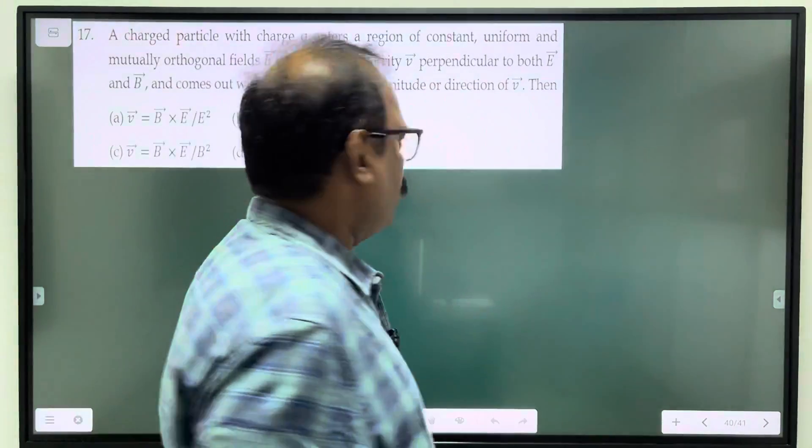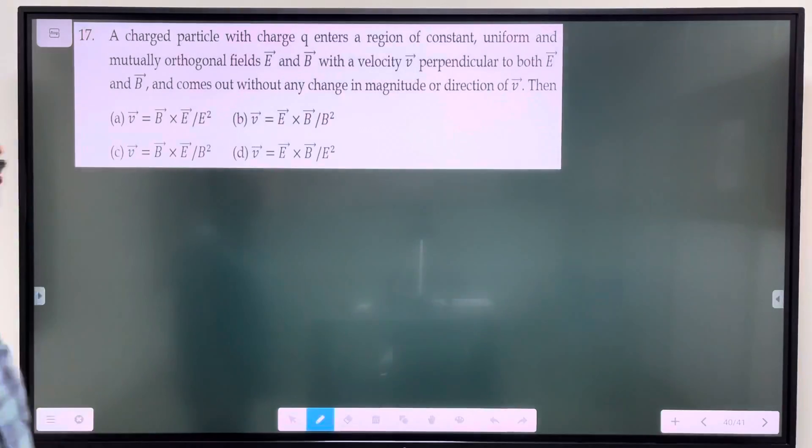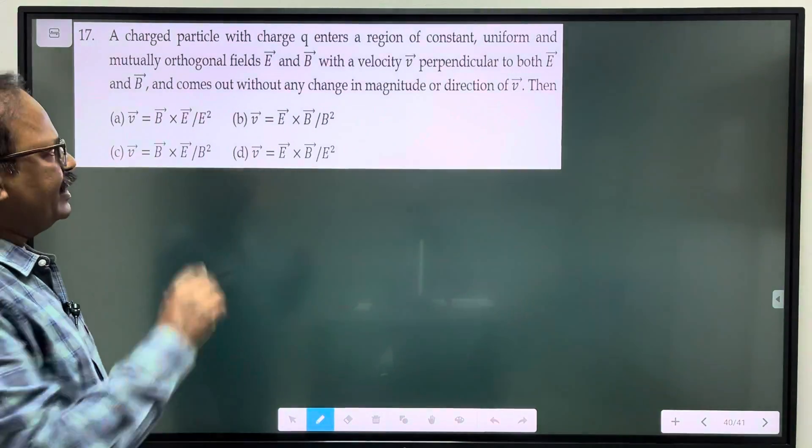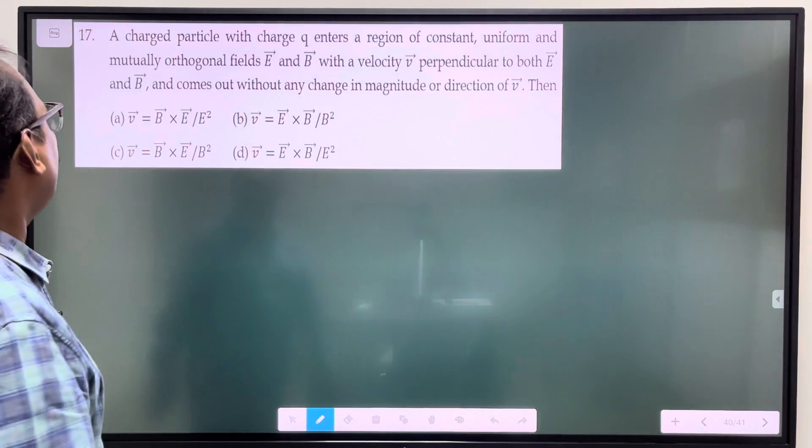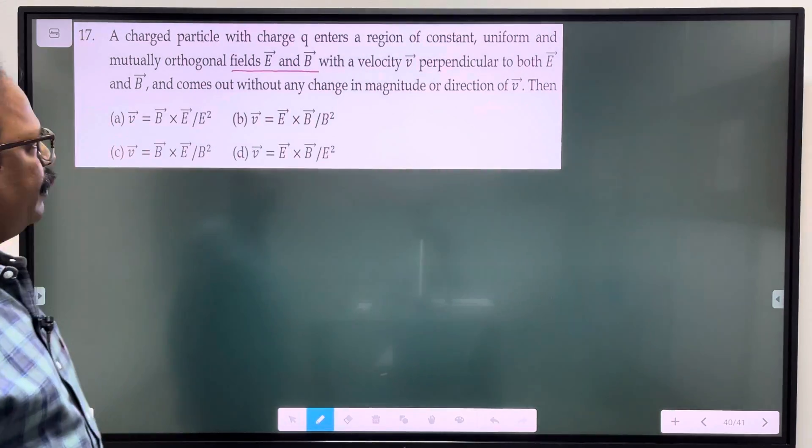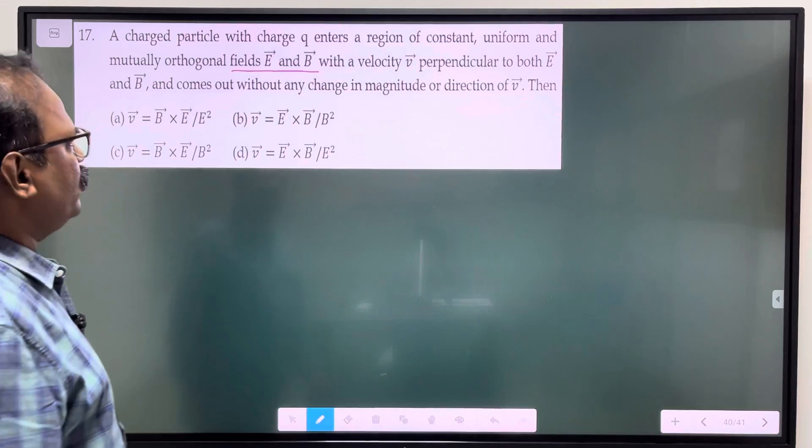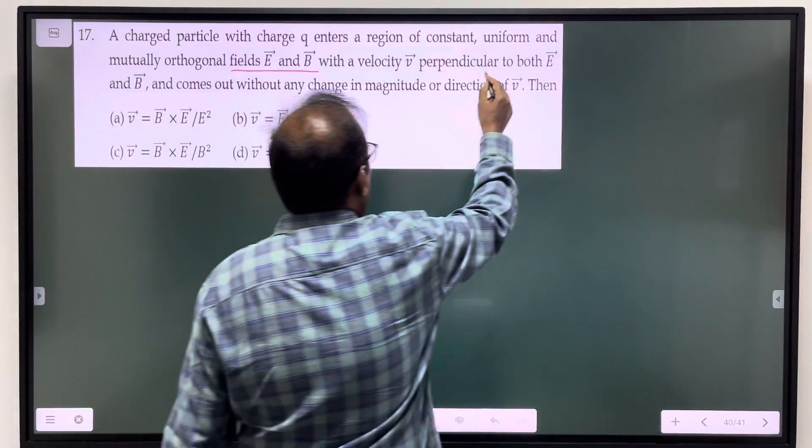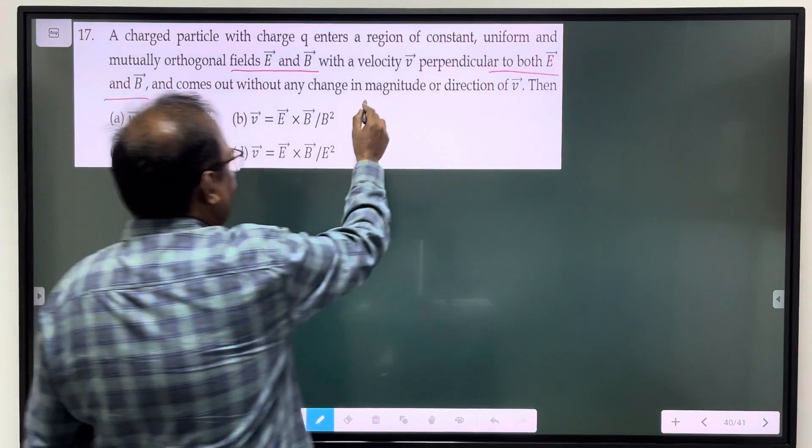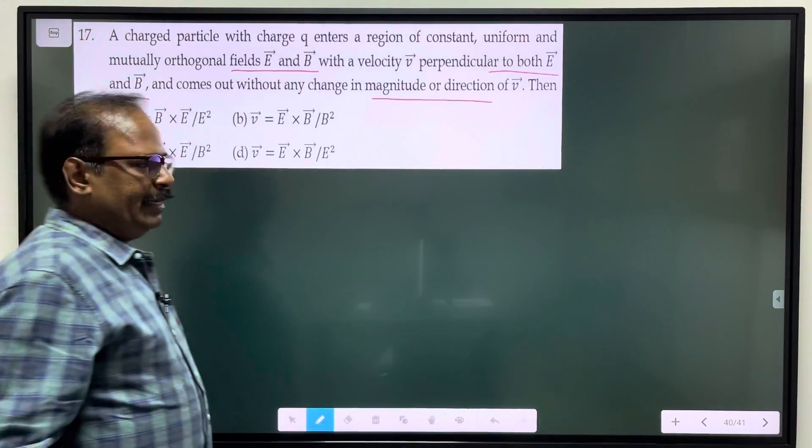Students, welcome. In question 17, a charged particle with charge q enters a region of constant, uniform, mutually orthogonal fields E and B, electric field and magnetic field, with velocity v perpendicular to both E and B and comes out without any change in magnitude and direction. Then which is correct?